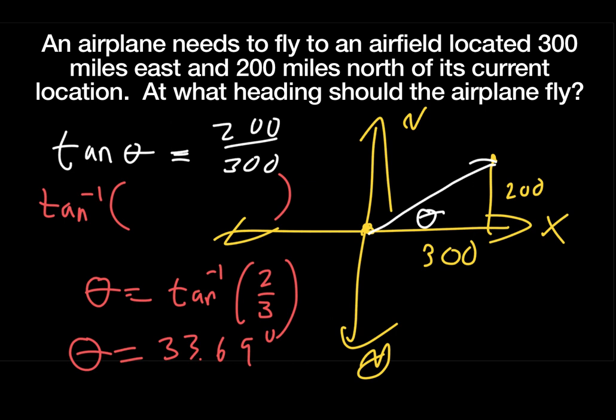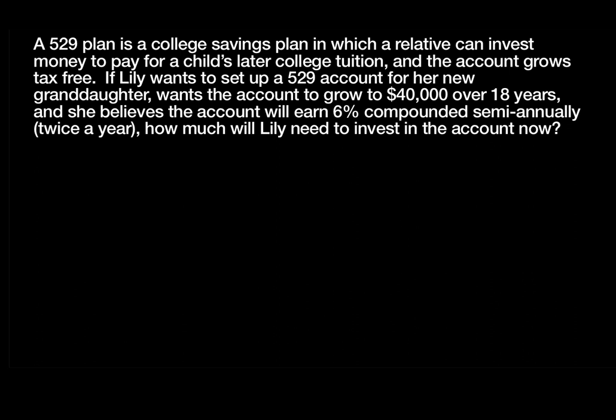The hard part on final exams is realizing some questions are as simple as they sound, even when we're doing more complicated things now. A 529 plan is a college savings plan where a relative can invest money for a child's later college tuition — the account grows tax-free. Lily wants to set up a 529 account for her new granddaughter, wants the account to grow to $40,000 over 18 years. She believes the account will earn 6% compounded semi-annually.